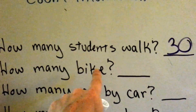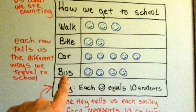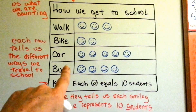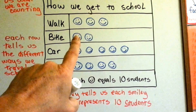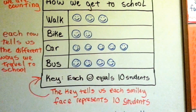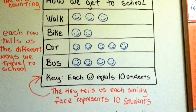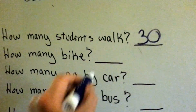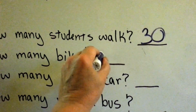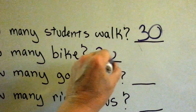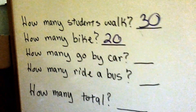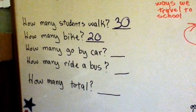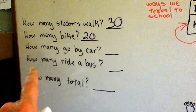How many go by bike? Remember, we're skip counting by tens: ten, twenty. Twenty children ride their bike. I hope they have a good strong chain and lock to lock it up outside so nobody steals it outside the school in the bike rack.